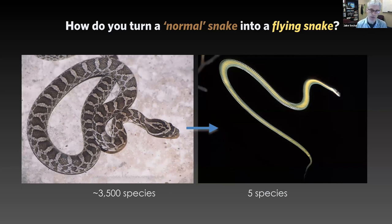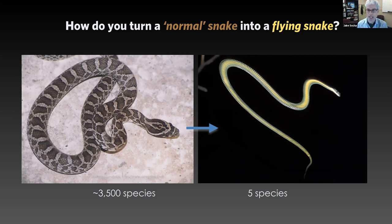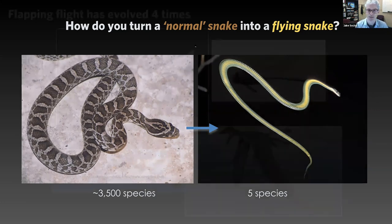We think gliding evolved once in snakes — it's a pretty rare but spectacular thing. To understand it, you have to understand what it means to be able to fly if you're a snake: what things are necessary, what are not. You would think a flyer needs wings, but as you can see in this picture, there are no wings. So how in the world does that happen?